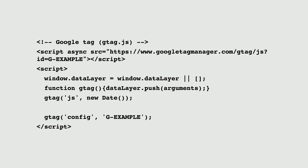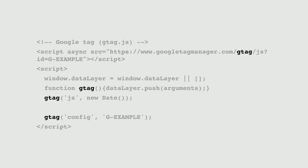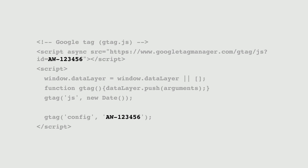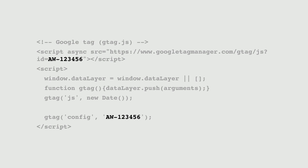Apart from the comment above the tag, the giveaway is that the script includes references to gtag, which is short for Google Tag. The Google Tag can also be the dedicated tag you use to send data to Google Ads. Here we can see the Google Tag for Google Ads. The only difference to the tag we were just looking at is that the tag ID starts with AW, so this tag will send data to Google Ads. This code is the Google Tag — it was also previously called the global site tag, gtag.js, or even the Google Analytics Tag or the Google Ads Tag.